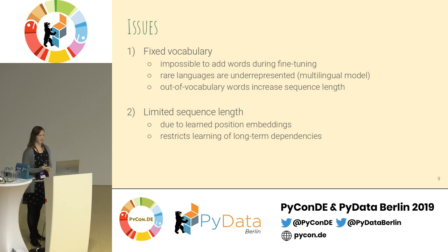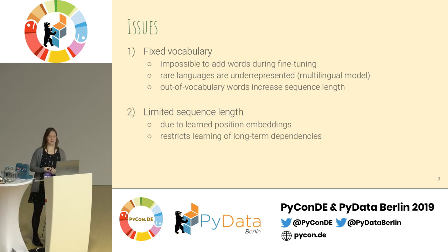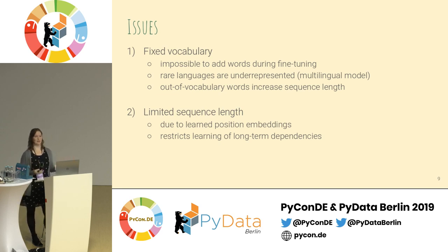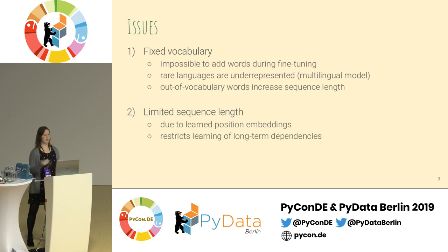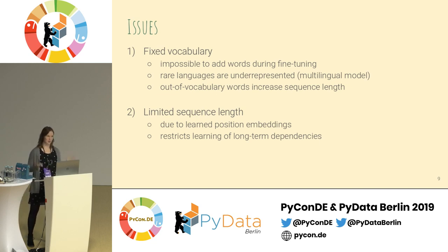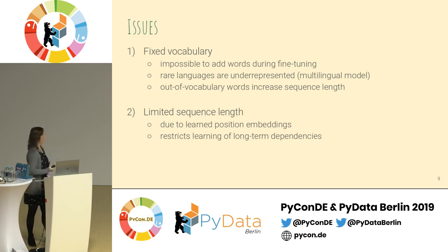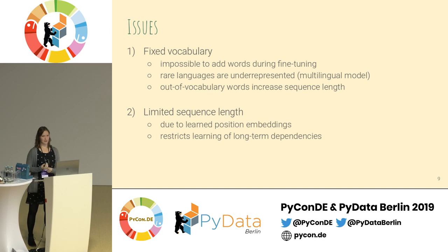These are basically the issues I see. The first one: this vocabulary list is fixed during the pre-training phase. Words that were common on, say, Wikipedia made it into this list. Once you fine-tune on your own data, which might have very domain-specific language, it's not possible to add these words afterwards — at least not using the default implementations available online. In the case of the multilingual model, it's also good to know that rare languages are underrepresented.